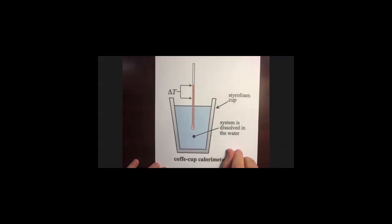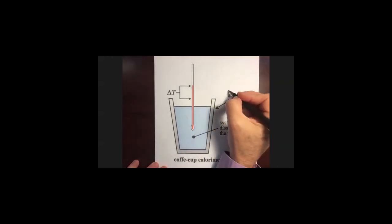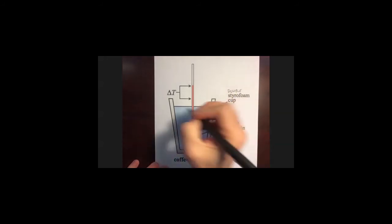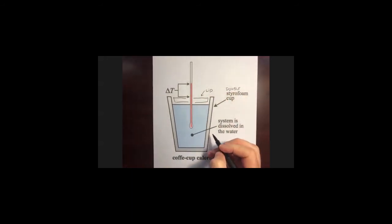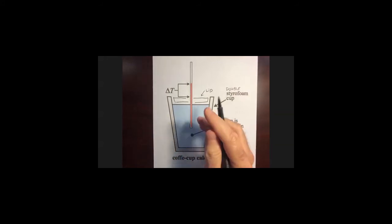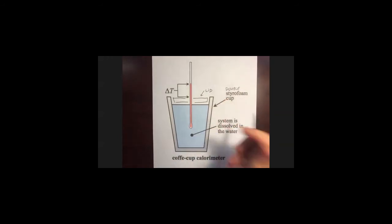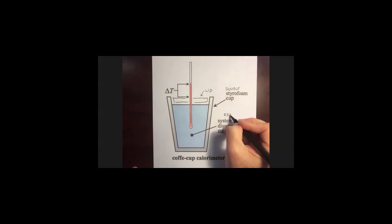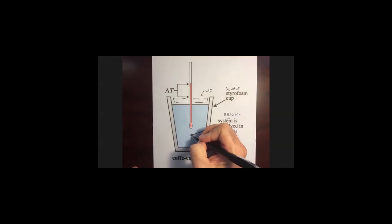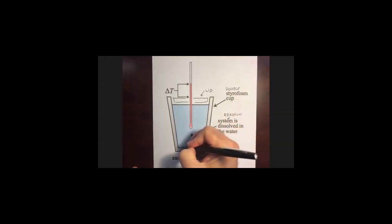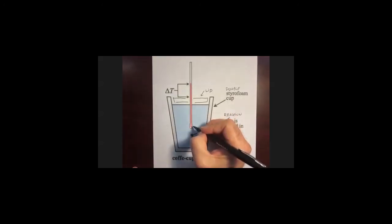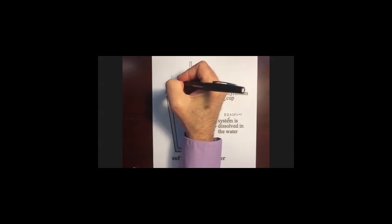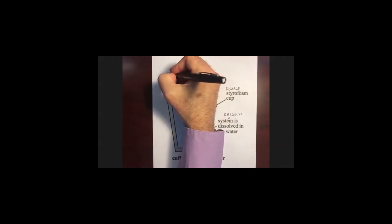A calorimeter can be made by putting together a styrofoam cup — actually we're going to use a double styrofoam cup, and we'll even put a lid to make it better insulated. Everything inside the calorimeter retains all the thermal energy. Our system is a reaction happening in aqueous solution, so the surroundings are the solution and the inside wall of the calorimeter. We're going to put a thermometer in the solution and measure the temperature change of the surroundings.